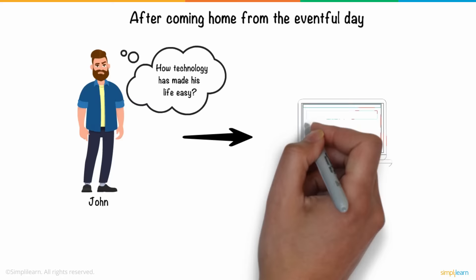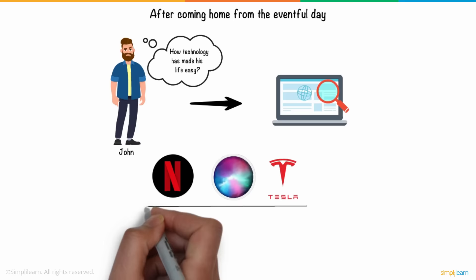he started wondering how technology has made his life easy. He did some research on the internet and found out that Netflix, Siri, and Tesla are all using AI.